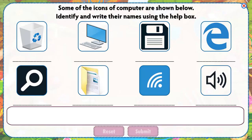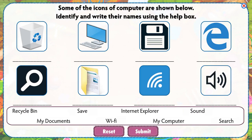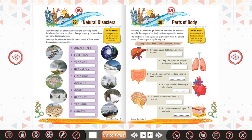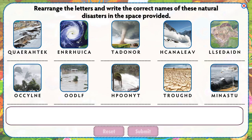Some of the icons of a computer are shown below. Identify and write their names using the help box. Rearrange the letters and write the correct names of these natural disasters in the space provided.